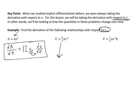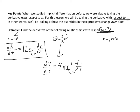For the second example, the derivative of V with respect to t on the left-hand side gives us dV/dt, because V is not t, so we must apply the chain rule. On the right-hand side, 4/3 and π are constants, and r is the variable. Using the power rule, I bring the 3 down to get 4πr squared, then multiply by the chain rule factor dr/dt.